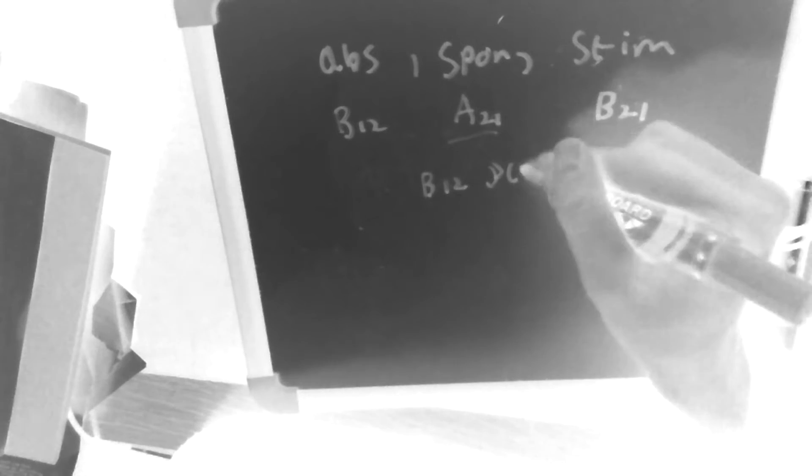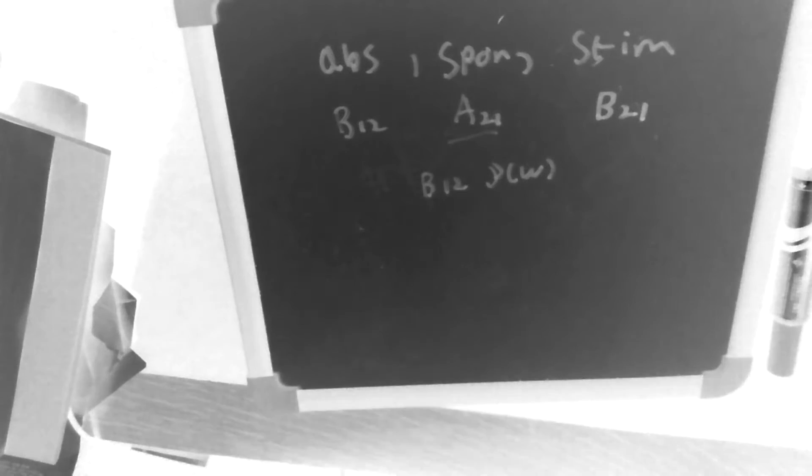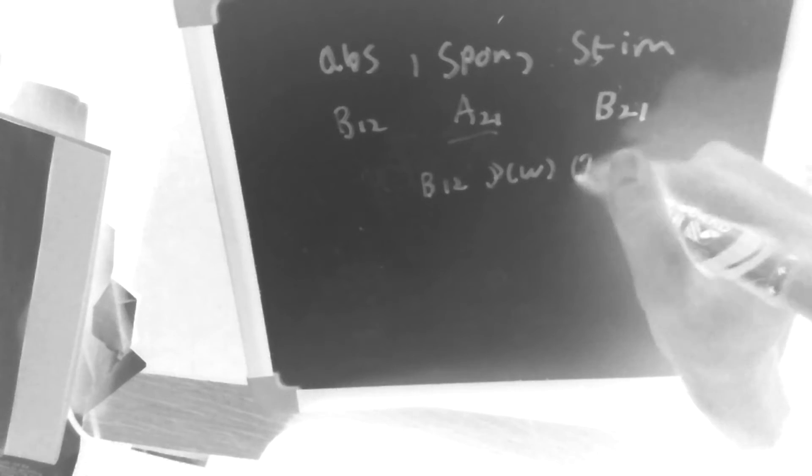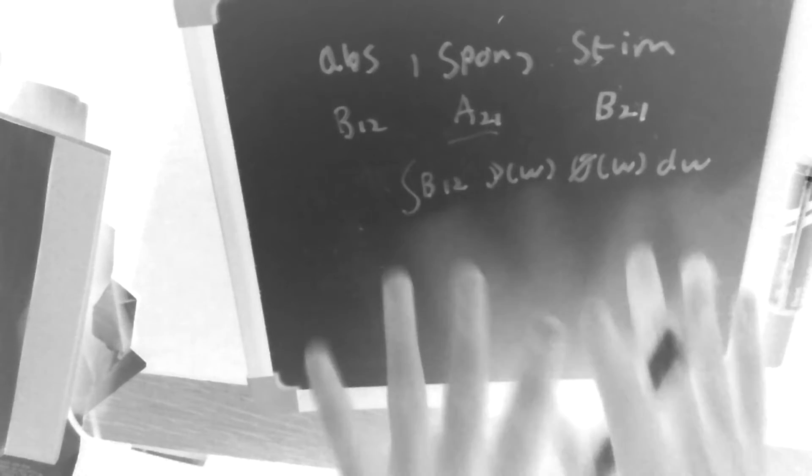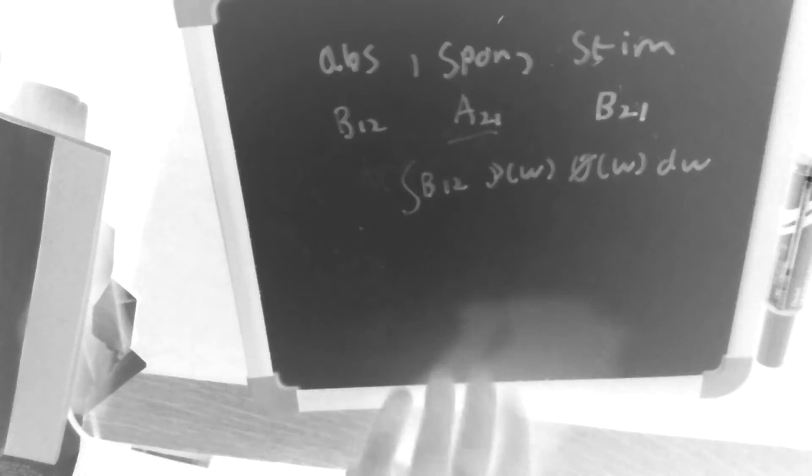Instead, we say that B12 times rho omega, where rho here is the energy density of the EM field, or that electromagnetic field that the atom's in, times by something called the line width, times d omega, and we should also integrate over omega. So then that is the probability per unit time that an atom in level 1 will absorb a photon to move to level 2.